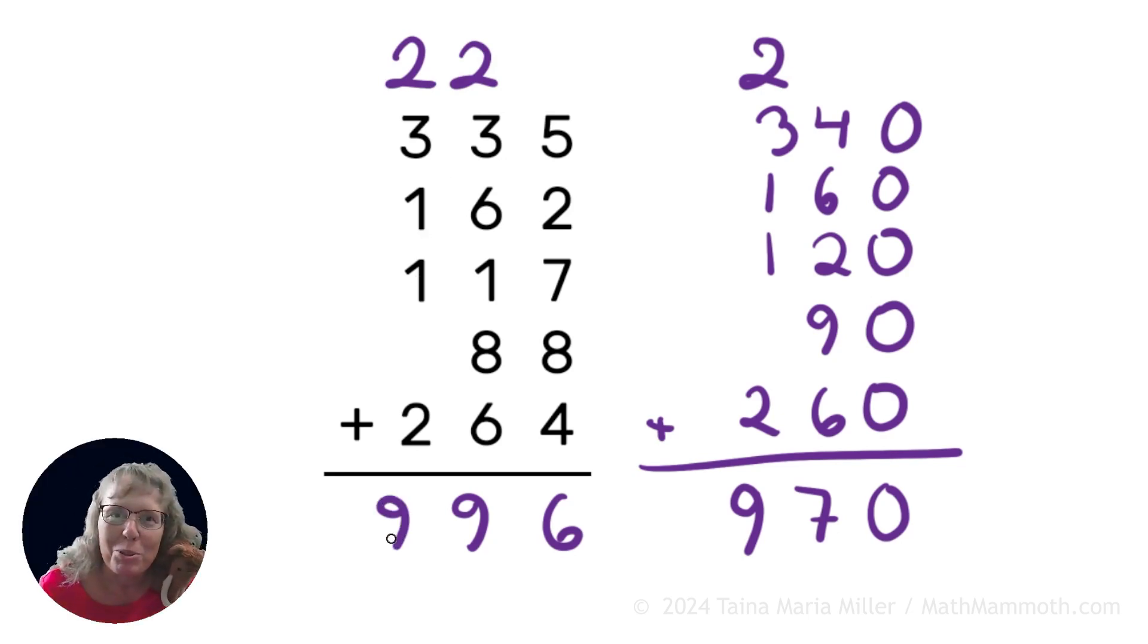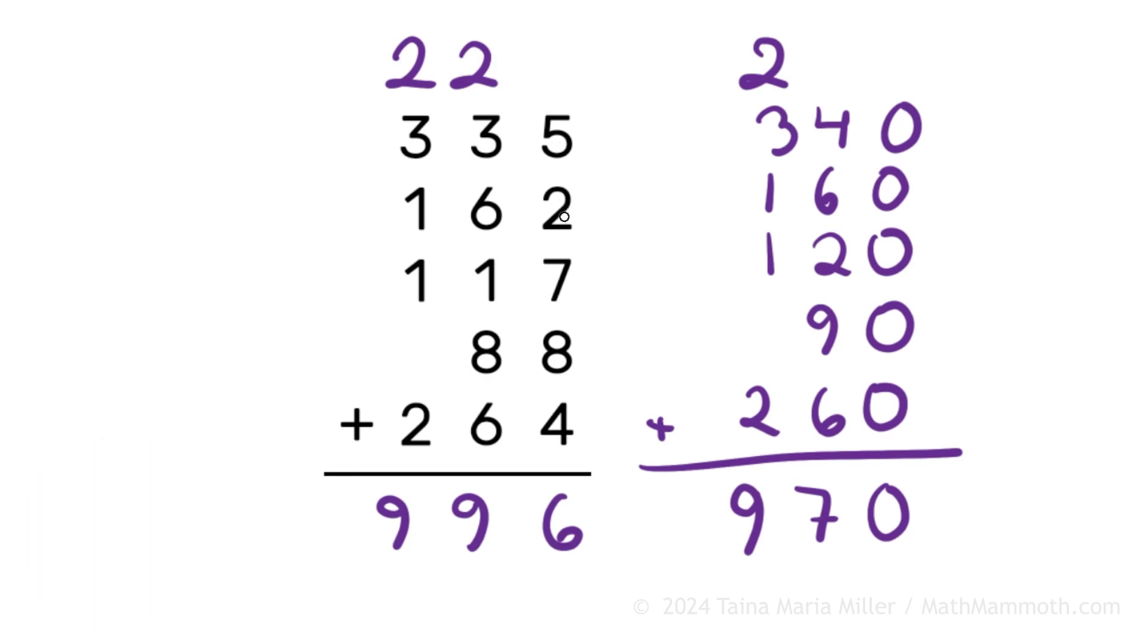All right, what do you think? Did he get it correct? We have 996, 970. They look a little off, okay? They look a little different. They look far apart from each other. So let's check Mathie's work. Look, we have here 5 plus 2 is 7 plus 7, 14, 22, 26. Yes.